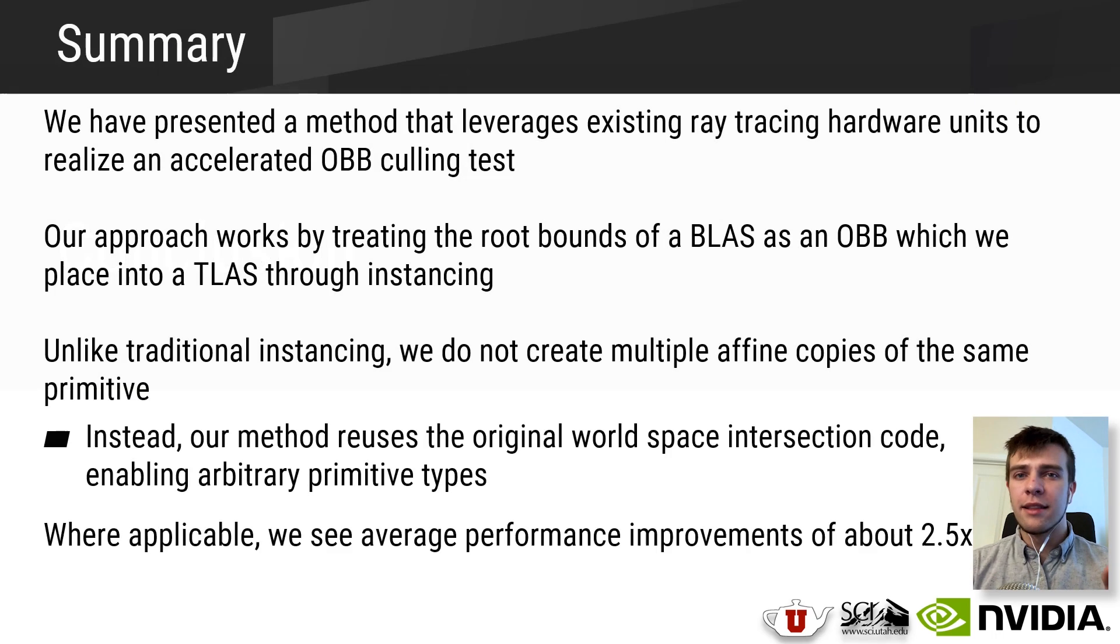To conclude, we have presented a method that leverages existing ray tracing hardware units to realize what's essentially a hardware accelerated object bounding box culling test. Our approach works by treating the root bounds of a bottom-level acceleration structure as if it were an OBB which we place into a top-level acceleration structure through instancing. However, our method is different from traditional instancing in that while instancing traditionally is limited to creating multiple affine copies of the same primitive, our approach is not. Instead, our method reuses the original world space intersection code which enables us to handle unique primitives like curves, capsules, and cones.